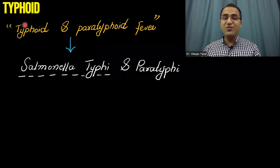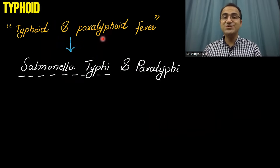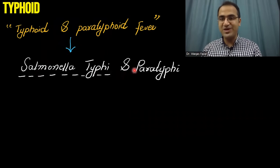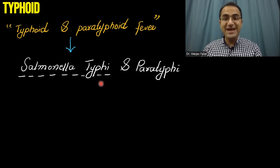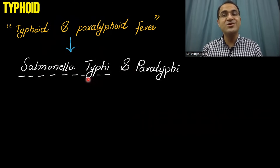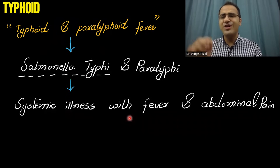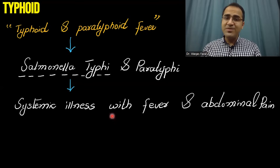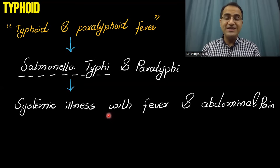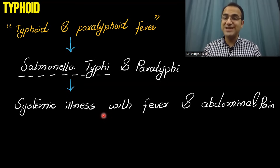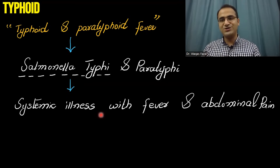Typhoid and paratyphoid fever is caused by bacteria Salmonella typhi and paratyphi, with Salmonella typhi being the most common one. It results in a systemic illness with fever and abdominal pain. Remember, typhoid is a very important differential in patients having fever of unknown origin.